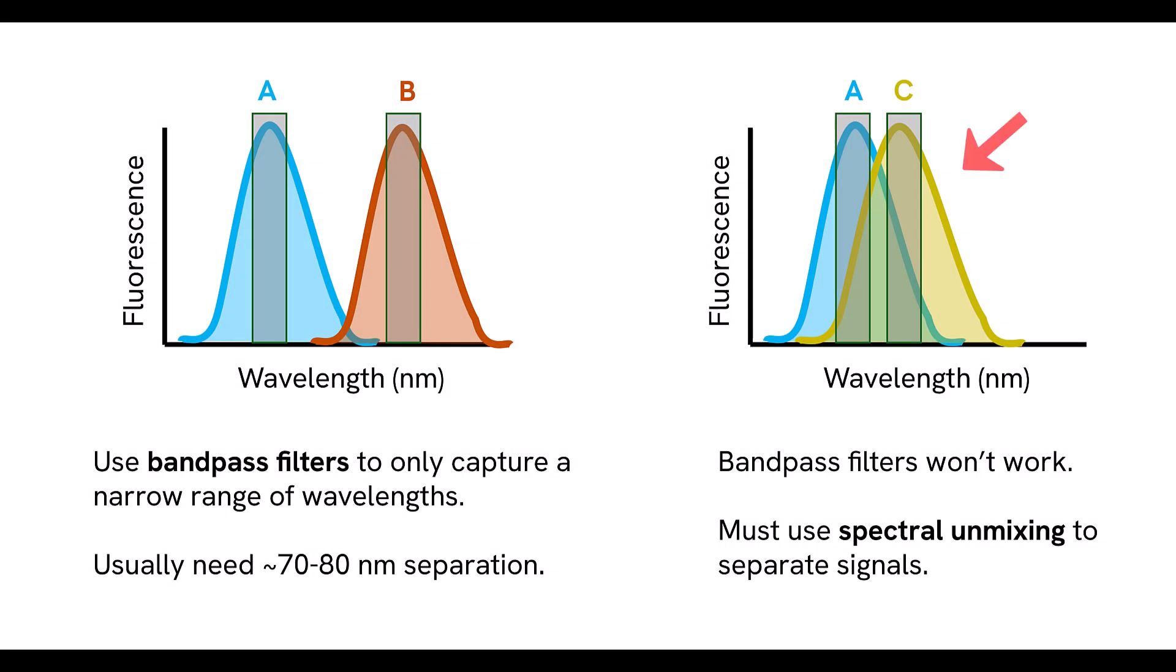In this video we look at how to use spectral unmixing to separate two or more fluorescent signals that have significant spectral overlap. Spectral unmixing is an image acquisition technique that can separate signals coming from two or more sources when signals have significant spectral overlap and filters cannot be used to isolate each signal.